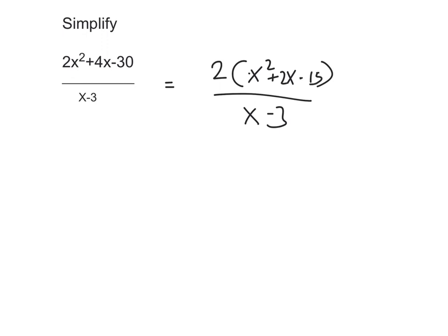Now, the mistake people commonly make here is that they leave it like this because they've got two factors. But sometimes you can get more than two factors. If you notice, the expression inside is actually a quadratic trinomial, so you can do quadratic factorizing on that factor and split it into two more factors. As there's no coefficient before the x², this is quite an easy quadratic factorizing problem.